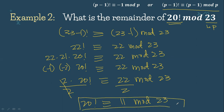That will be our answer for this problem. The remainder of 20 factorial mod 23 is 11.